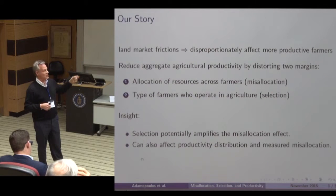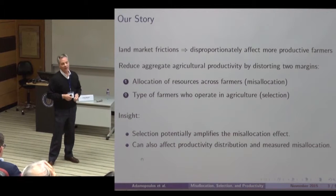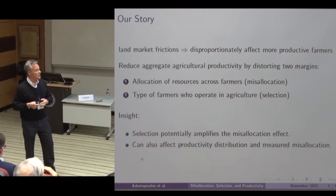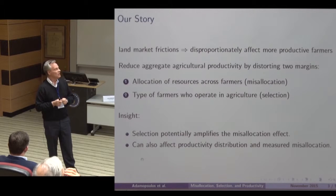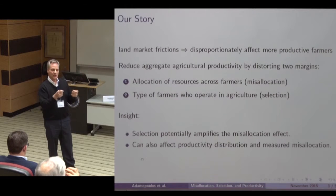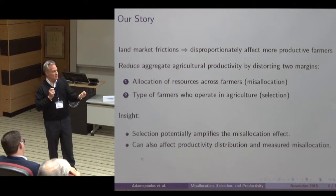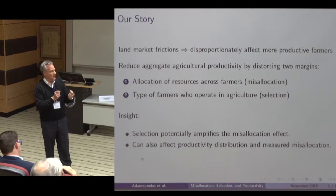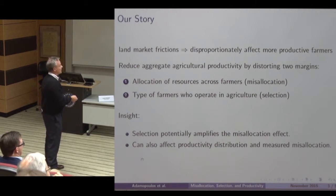If I happen to be a really productive farmer and I want to expand the size of my operations, but I can't because the land market doesn't work well, then I'm going to decide to do something else. That margin is going to be extremely important in terms of who's in agriculture and who's outside — it's going to have implications for productivity in agriculture, productivity outside, and potentially important implications for productivity not only in agriculture but also in non-agriculture. The key insight of this paper is that the selection mechanism will amplify the traditional misallocation effect, and insofar as selection is present, it's also going to affect the productivity distribution and our measured misallocation. If the more productive farmers decide because of these constraints to move out of agriculture, it will actually reduce the dispersion of productivity of those who remain — so measured misallocation might suggest it's less of an issue than it actually is.